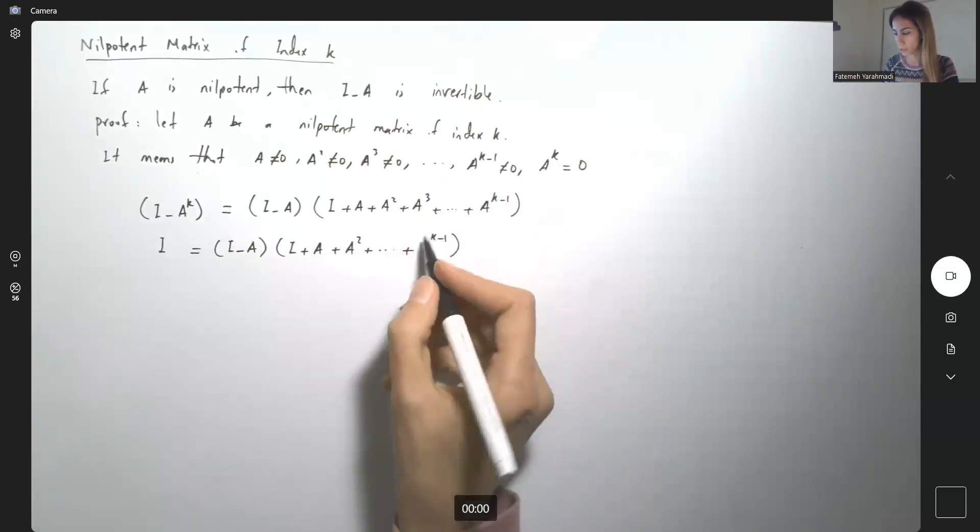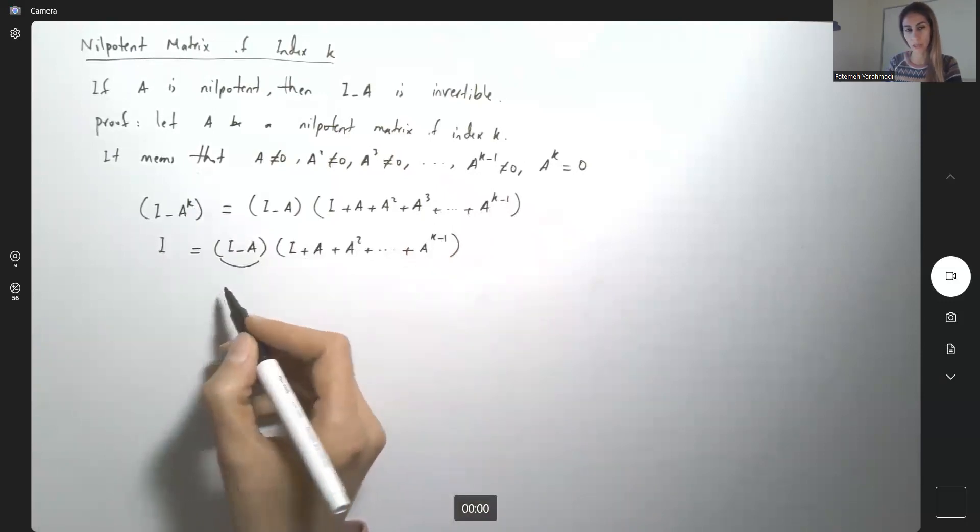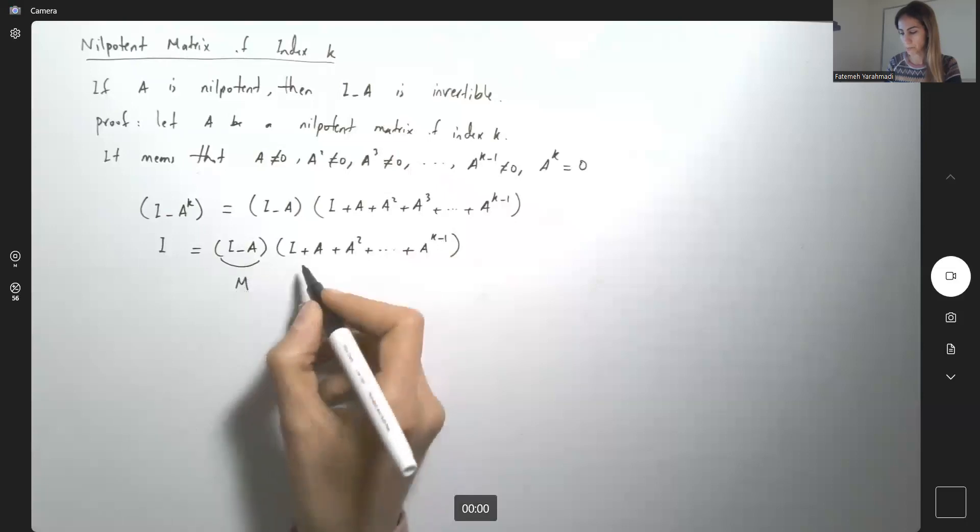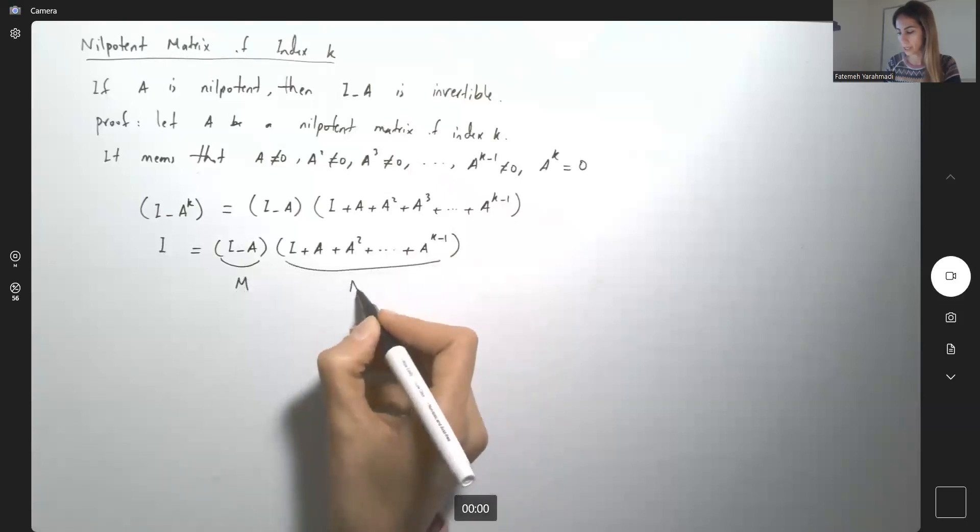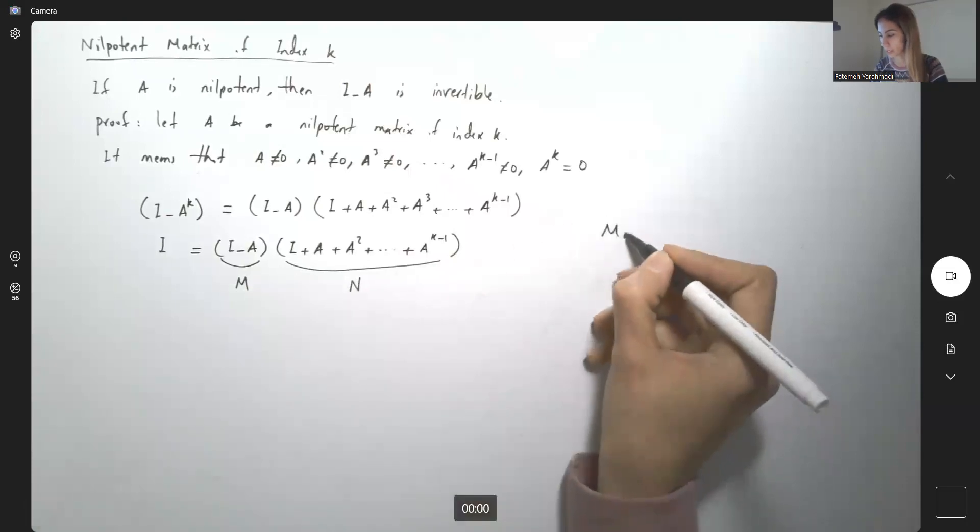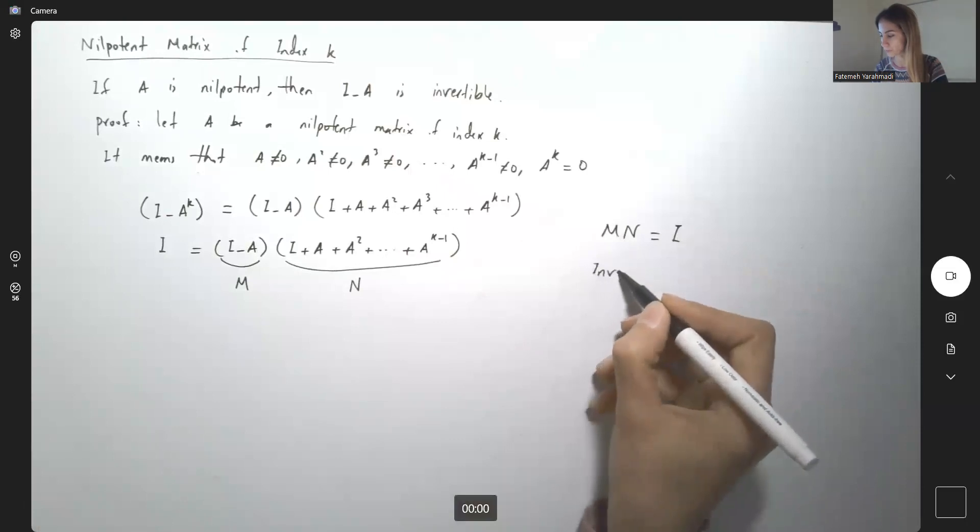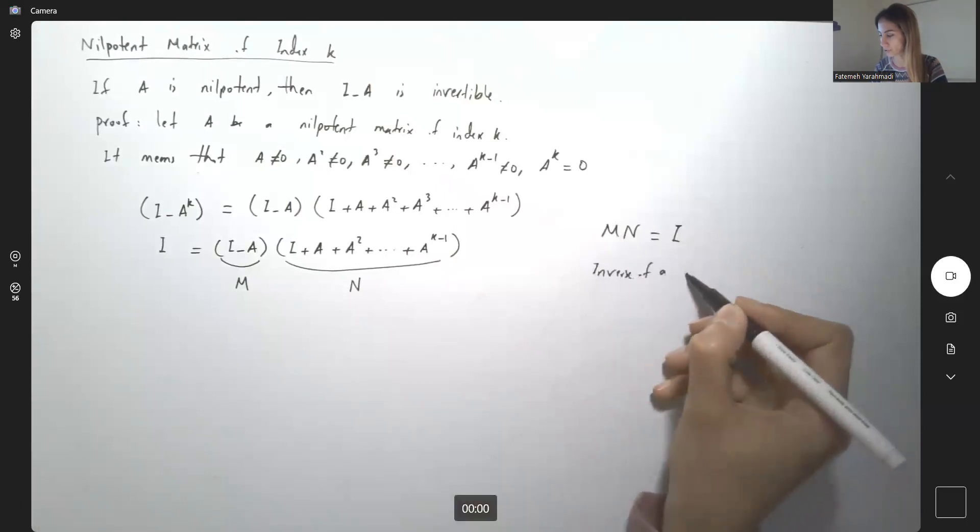Very good. So what's the meaning of that? It means that I have the very first matrix, suppose this is matrix M, multiplied by matrix N. The outcome is identity matrix. M times N is I, but this is basically the definition of inverse of a matrix.